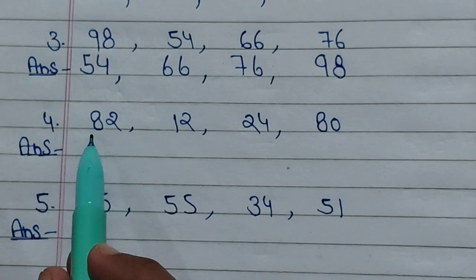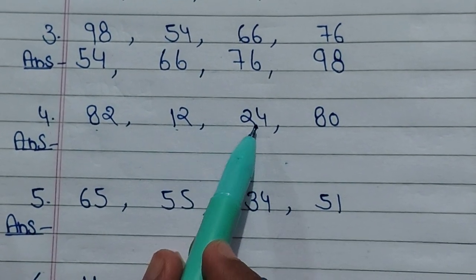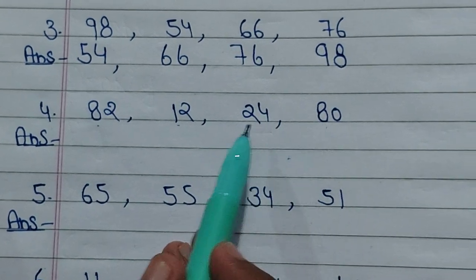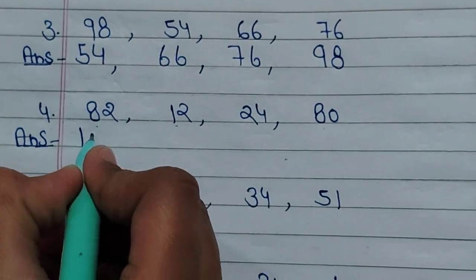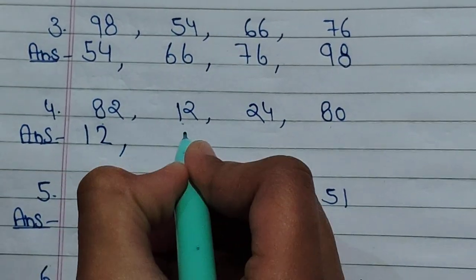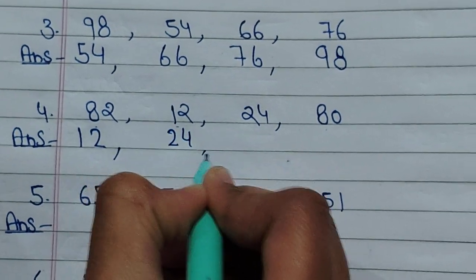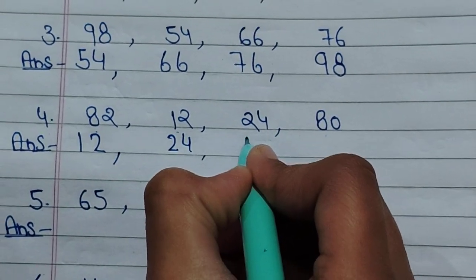82, 12, 24, 80. In ascending order: 12, 24, 80, 82.